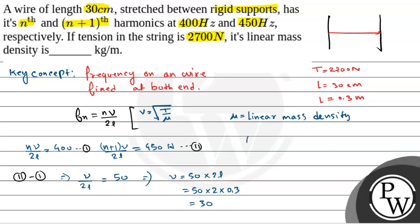Now, we know that velocity of wave in the wire is equal to square root of T by mu. So 30 is equal to square root of tension that is 2700 by mu. So this is equal to mu is equal to, after squaring, this is equal to 2700 by 900. This is equal to 3 kg per meter.